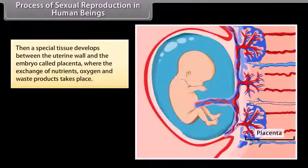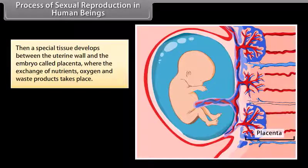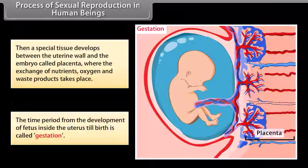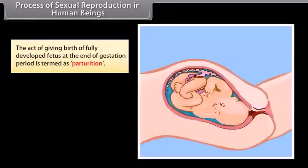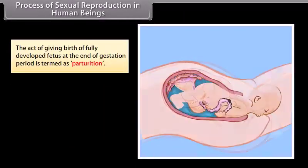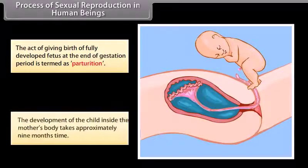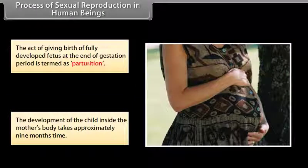A special tissue called the placenta develops between the uterine wall and the embryo, where exchange of nutrients, oxygen and waste products takes place. The time period from the development of the fetus inside the uterus until birth is called gestation. The act of giving birth to a fully developed fetus at the end of the gestation period is termed parturition. Development of the child inside the mother's body takes approximately nine months.